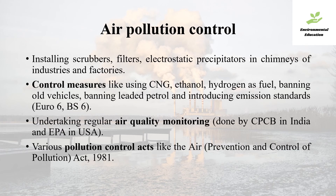Now how to control air pollution? Installation of scrubbers, filters, and electrostatic precipitators in the chimneys of industries and factories can help combat pollutants. Control measures like using CNG, ethanol or hydrogen as clean fuels, banning of old vehicles, banning leaded petrol, and introduction of emission standards like Euro 6 and Bharat Stage 6 are important steps. Undertaking regular air quality monitoring, done by the CPCB in India and the EPA in the USA, is also essential. Various pollution control acts like the Air Prevention and Control of Pollution Act of 1981 in India are being used to monitor air quality.